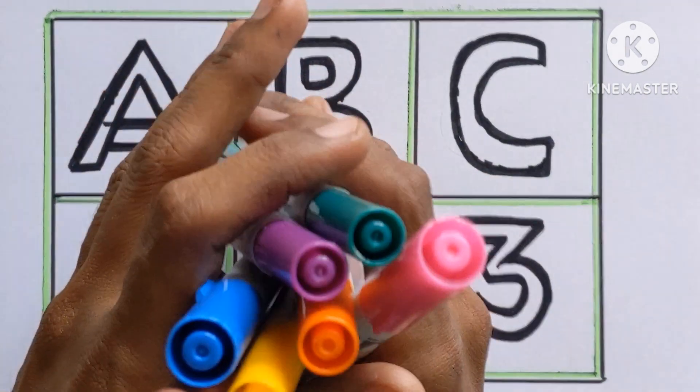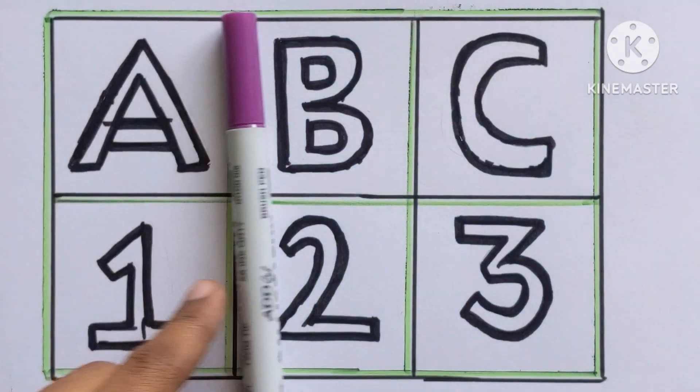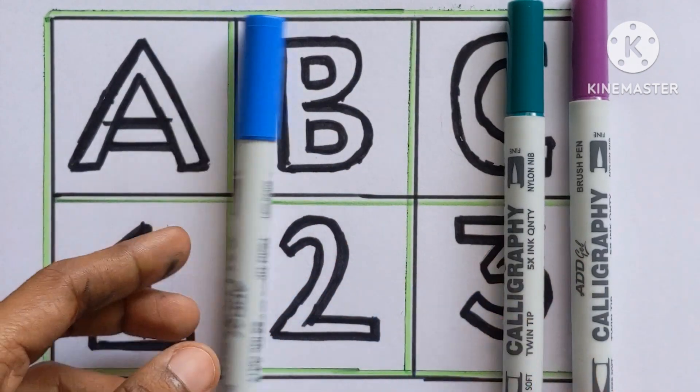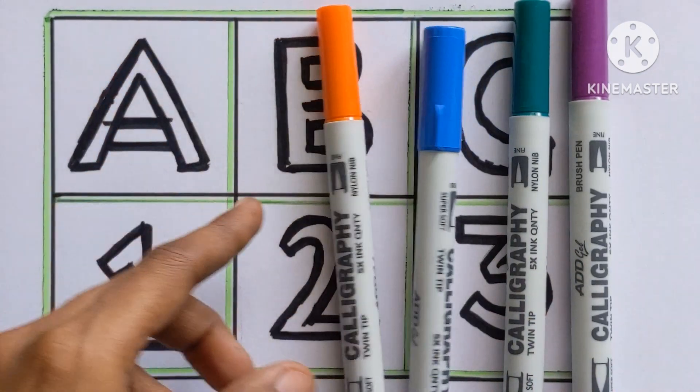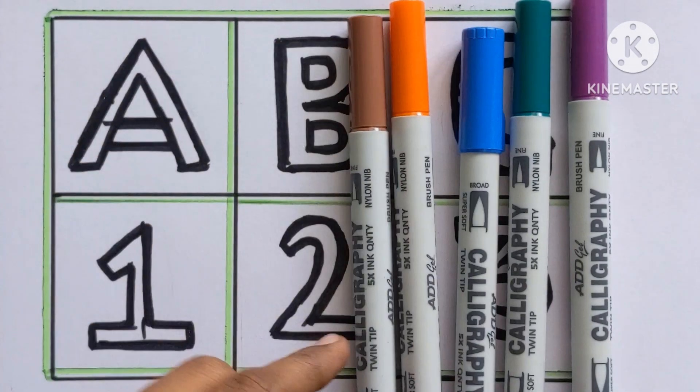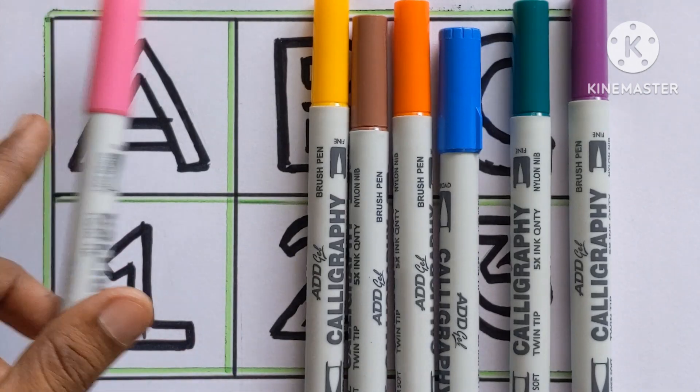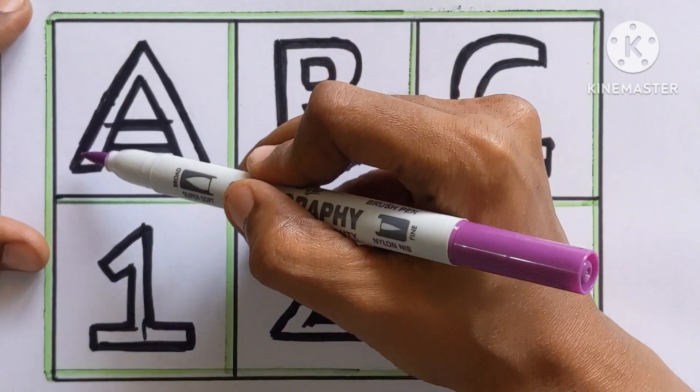First, let's learn some color names. Purple color, green color, blue color, orange color, brown color, yellow color, and pink color.